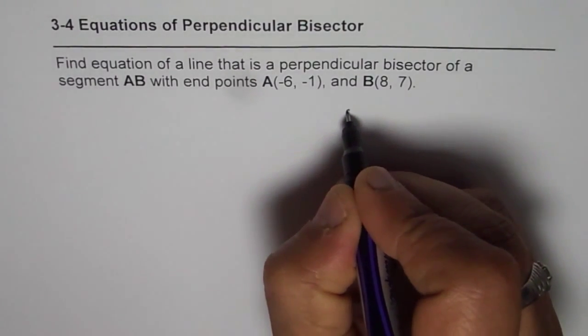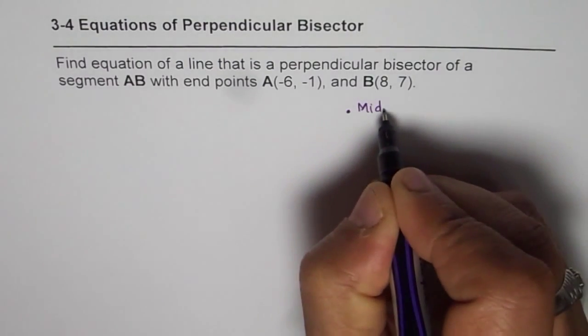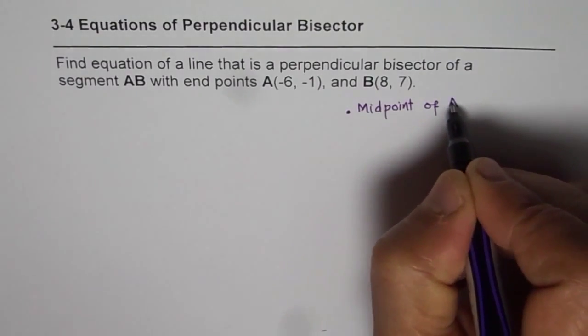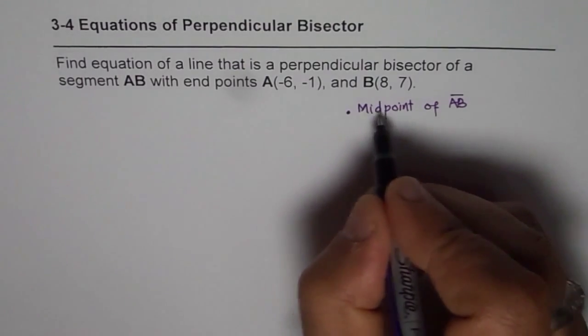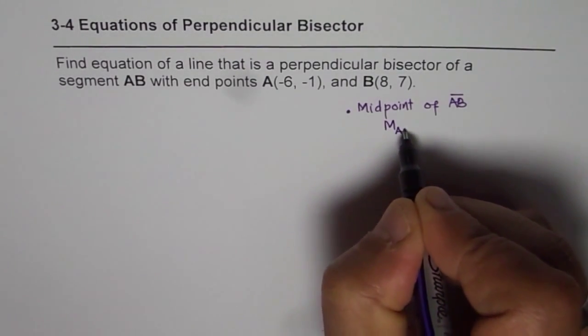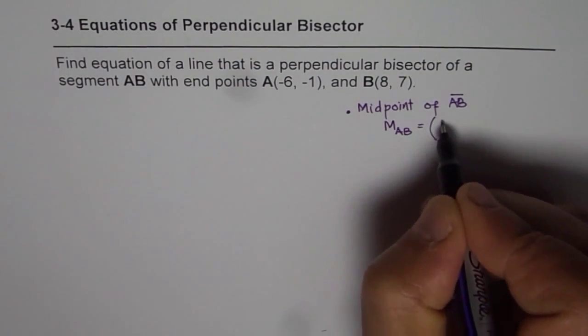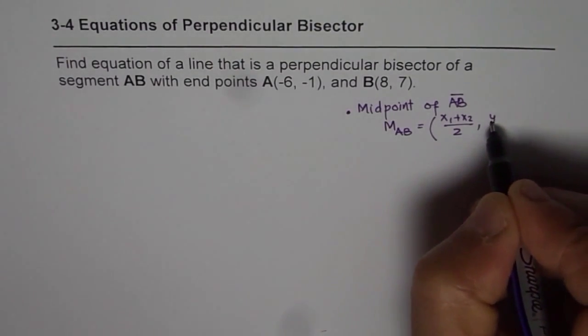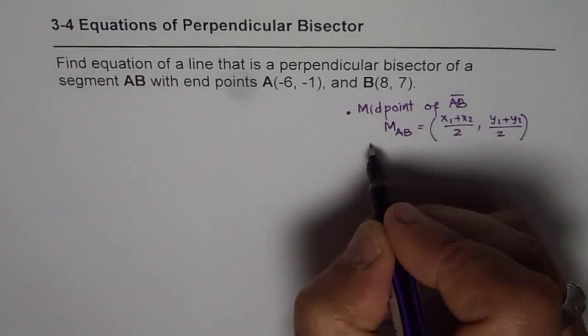The first step here should be to find midpoint of AB, the segment AB. You can use the midpoint formula, and let me call this midpoint as M_AB, that is midpoint of AB. Use the midpoint formula which is (x1 + x2)/2 gives you x value, (y1 + y2)/2 gives you y value. And this is using midpoint formula.